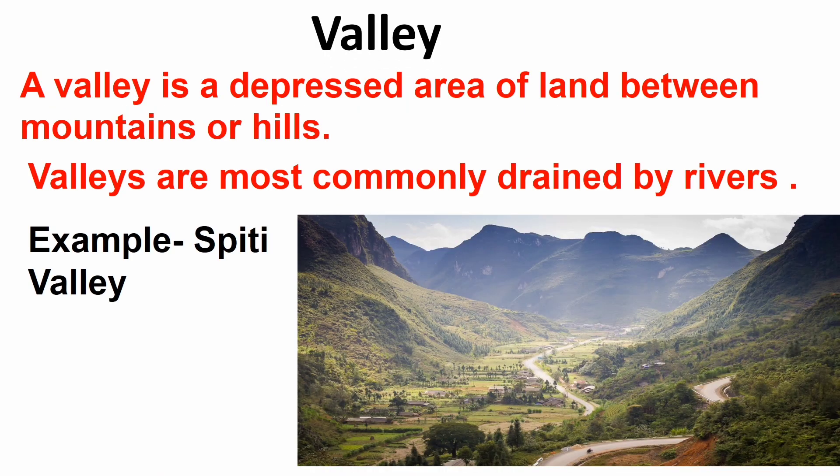Valley: A valley is a depressed area of land between mountains or hills. Valleys are most commonly drained by a river. Example, Spiti Valley.